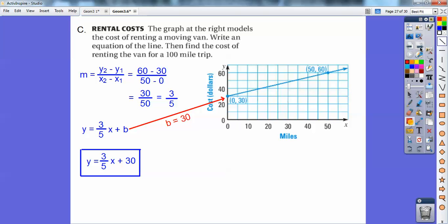Then it says, find the cost of renting the van on a 100-mile trip. X stands for the miles. So 100 miles is what I'm going to plug in right there. Y is the cost. This is my cost. That's Y right there. X is over here. X is the miles. Y is the cost.